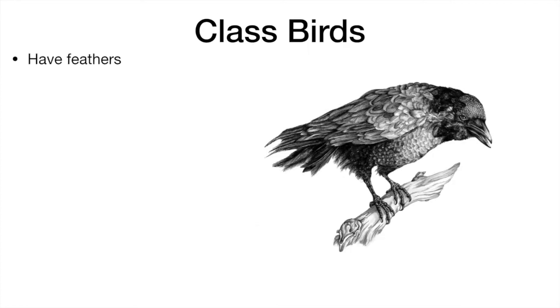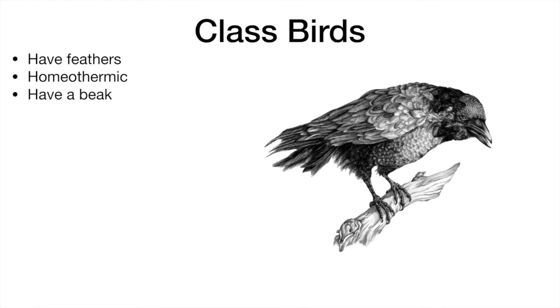Birds are vertebrates which have feathers and are homeothermic, or warm-blooded, in nature. They have a beak, a heart with four chambers, and four limbs which have been modified into wings.